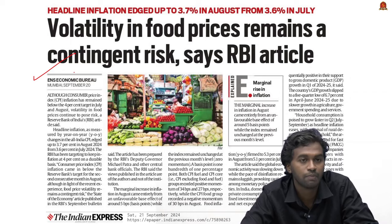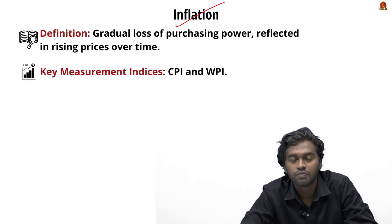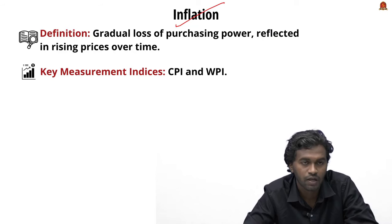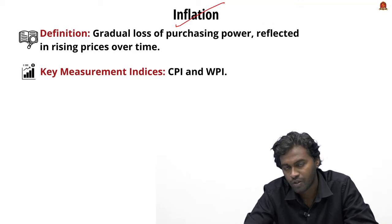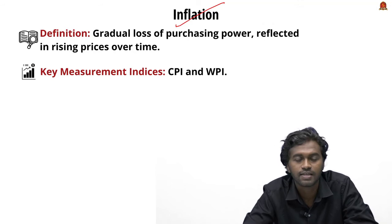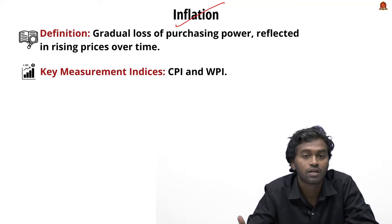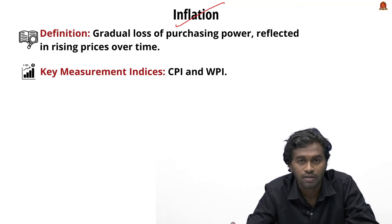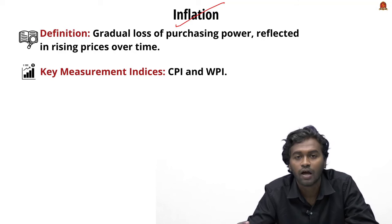From a prelims point of view, let's start with the basic question: what is inflation? Inflation refers to a gradual loss of purchasing power reflected in broadly rising prices over a period of time. Simply put, it is a constant rise in the general price level — commodity prices increase rapidly or slowly and eventually affect the purchasing power of consumers, creating a chaotic condition in the economy.